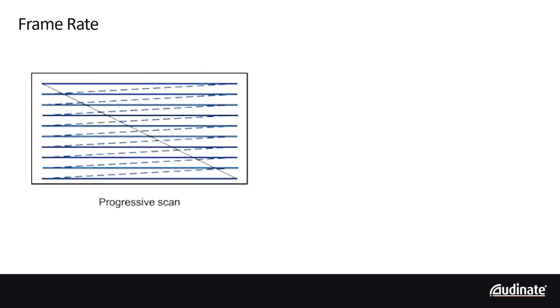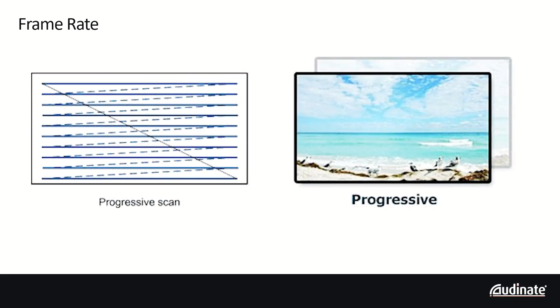Displaying each scan line consecutively is called progressive — for instance, 1080p. As screen sizes have increased, the desire to increase the frame rate even higher is to minimize visual artifacts. Not surprisingly, as video resolution, color bit depth, chroma sampling, and frame rate increase, so does the file size.